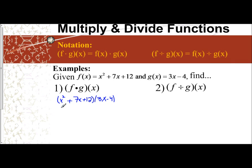When we multiply polynomials, we distribute and combine like terms. So it's the same thing here. x squared to 3x and x squared to negative 4 is 3x cubed minus 4x squared. 7x to 3x and 7x to negative 4 is plus 21x squared minus 28x. 12 to 3x and 12 to negative 4 gives me 36x minus 48.